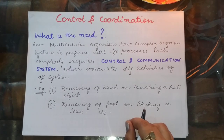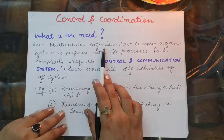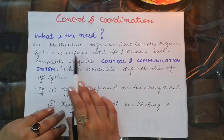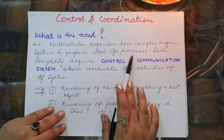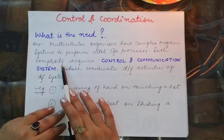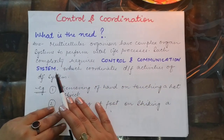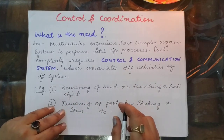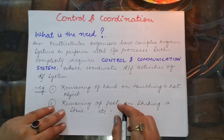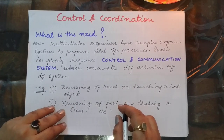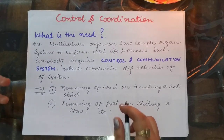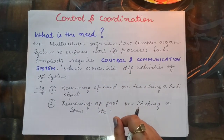The first question is: what is the need of control and coordination in the human body? Multicellular organisms, that means organisms made up of millions of cells, have complex organ systems to perform vital functions like respiration, nutrition, excretion, and transportation. Such complexity requires a control and communication system which coordinates different activities of different systems. For example, if the nervous system were not present, we would not have the feeling of a full stomach or the feeling of a full urinary bladder.